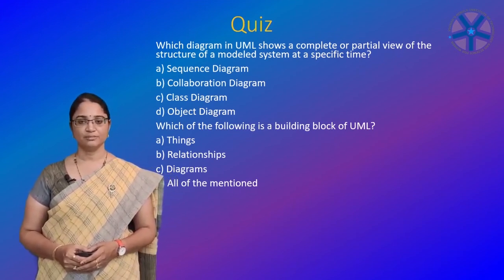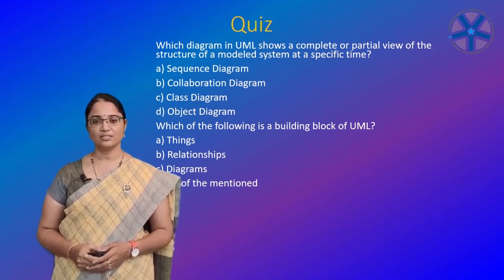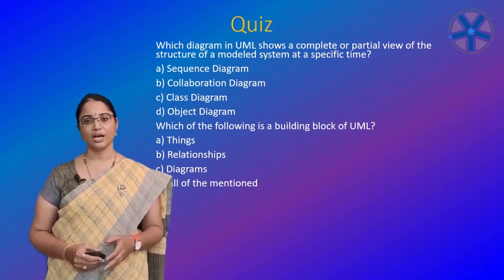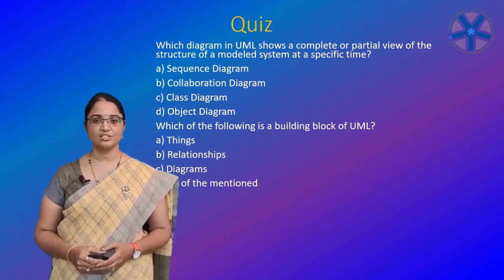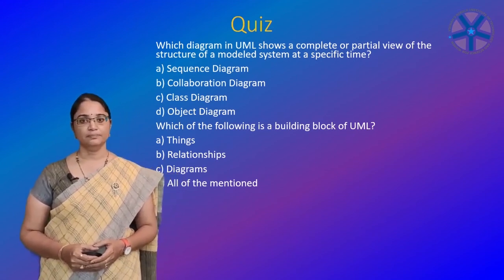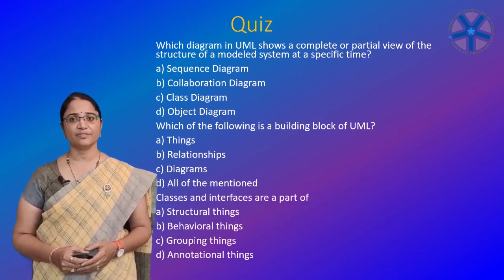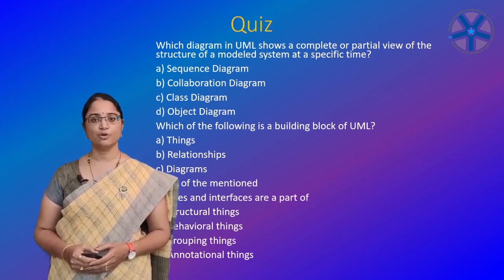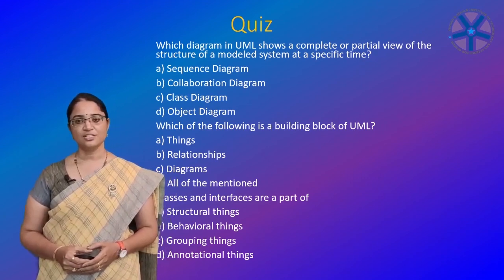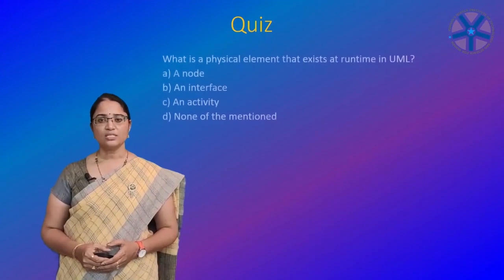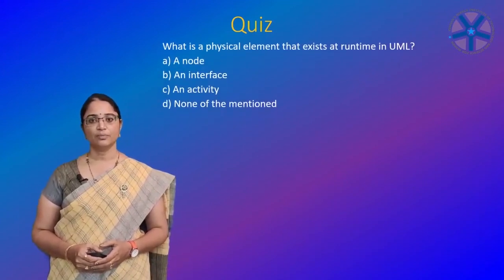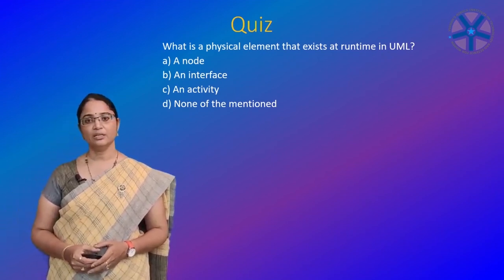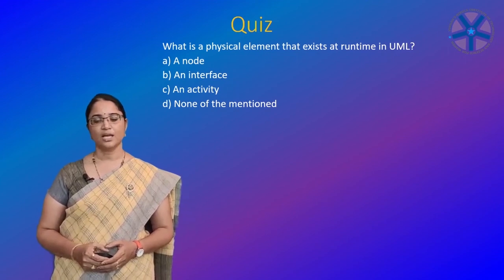Which of the following is a building block of UML? The options are: things, relationships, diagrams, or all of the mentioned. The conceptual model of UML consists of building blocks — things, relationships, and diagrams — so the answer is all of the mentioned. Classes and interfaces are part of structural things. The physical element that exists at runtime in UML is a node.